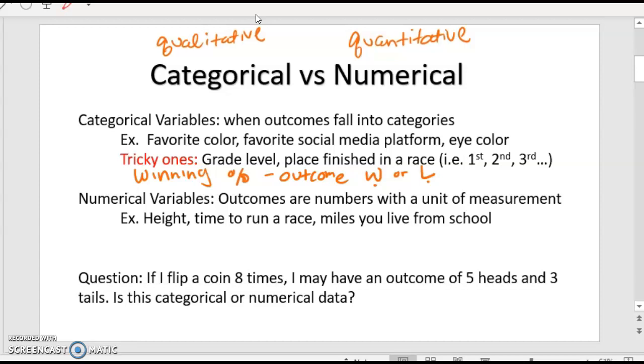Now, on the flip side, you have numerical variables. Numerical variables are a lot easier. So you have height, time it takes you to run a race, miles you live from school.